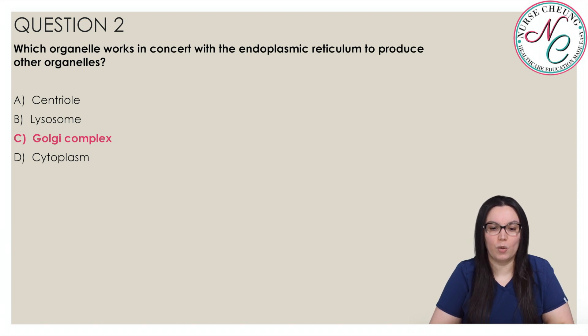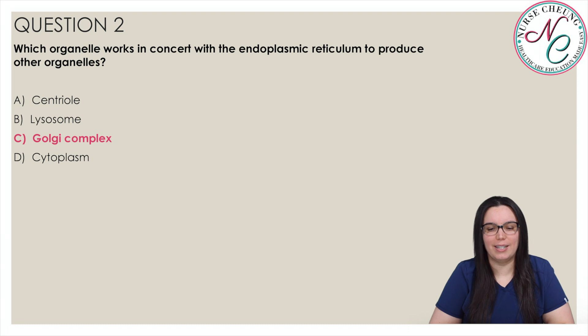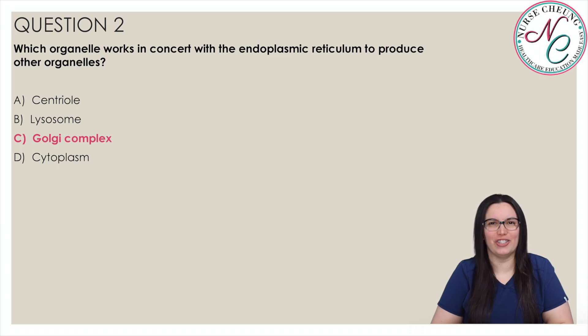The Golgi complex, or apparatus, uses the proteins created by the endoplasmic reticulum to build new organelles and other cellular structures.